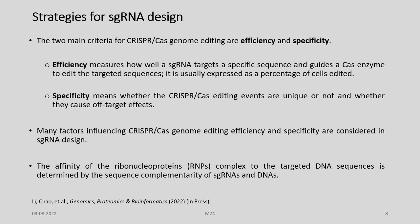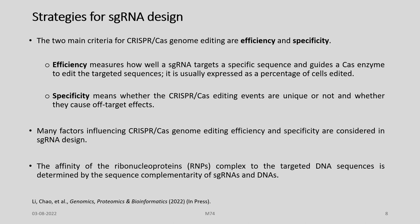Specificity means whether the CRISPR-Cas editing events are unique and whether there are off-target effects. Many factors influencing CRISPR-Cas genome editing efficiency and specificity are considered in single guide RNA design. The affinity of the ribonucleoprotein complex to the targeted DNA sequences is determined by the sequence complementarity of the sgRNA and DNA. To systematically characterize the relationship between sgRNA features and cleavage efficiency, Zhang and co-workers assessed more than 700 single guide RNA variants and over 100 potential target sites in human cells.